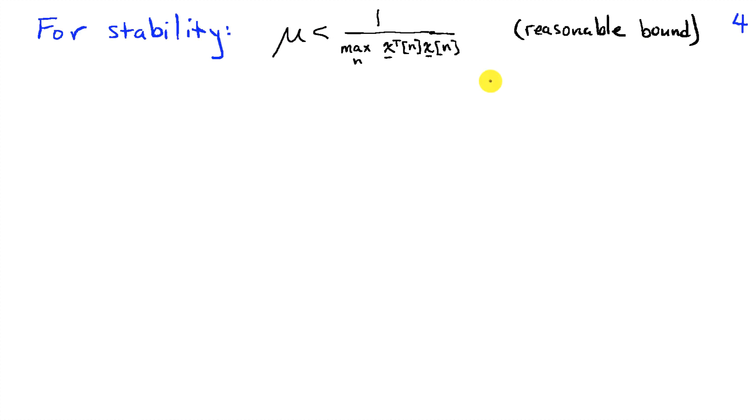The stability of the LMS algorithm has attracted interest for decades. I'm just going to present one stability bound that I think is fairly reasonable to work with, and it says that mu has to be smaller than the inverse of the worst-case power that is present in the weights. We're taking the maximum over n of the sum of the squares of all the x-values, and if we choose mu smaller than that, then we're going to have stability under pretty reasonable conditions.